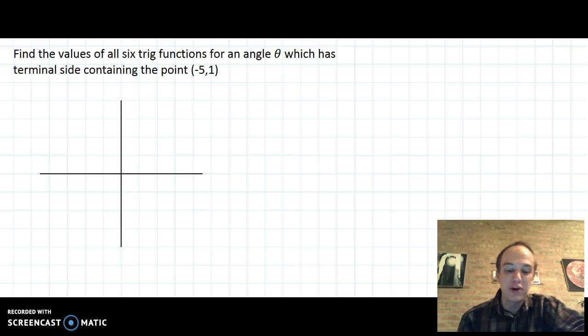The first problem we're going to do asks us to find the values of all six trig functions for an angle theta that has terminal side containing the point (-5, 1).